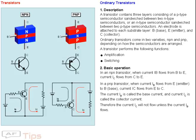Transistors. Ordinary transistors. A transistor contains three layers consisting of a P-type semiconductor sandwiched between two N-type semiconductors, or an N-type semiconductor sandwiched between two P-type semiconductors. An electrode is attached to each substrate layer — B,